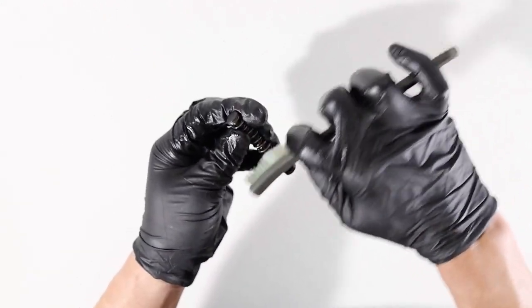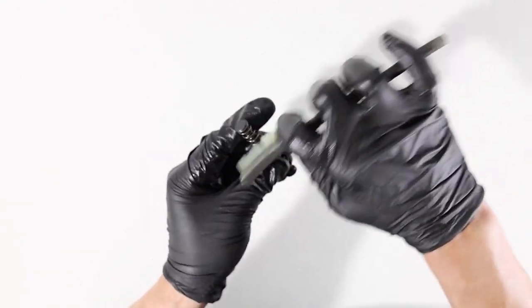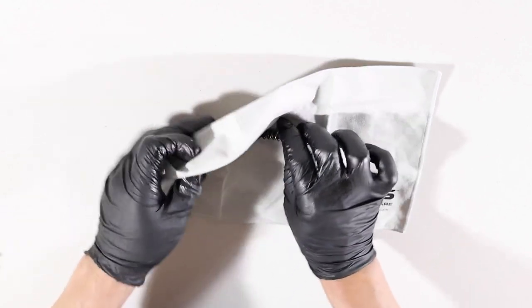Add CLP to the brush and scrub the recoil spring. Scrub in between the coils and on both ends. Now wipe off the excess CLP.